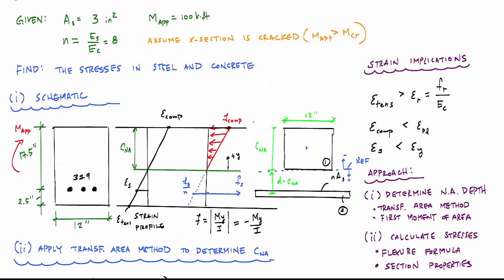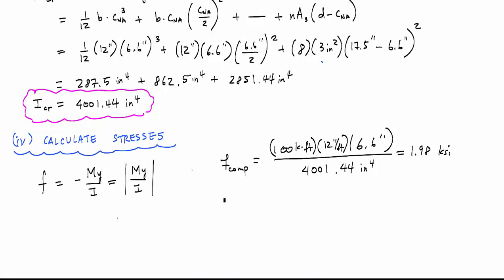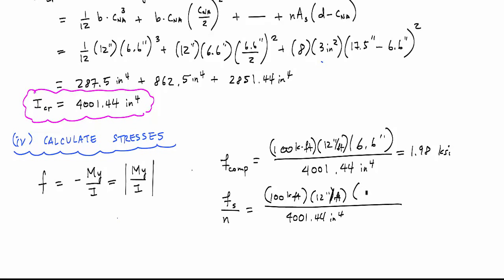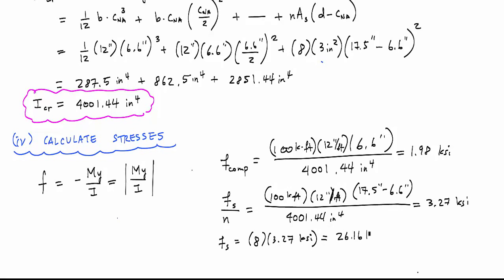To find the stress at the steel location, the equivalent concrete stress there is f_s / n. The distance from the neutral axis to the steel is 17.5 − 6.6 = 10.9 inches. Proportioning from the top: (1.98 / 6.6) × 10.9 = 3.27 ksi as the equivalent concrete stress. The actual steel stress is f_s = n × 3.27 = 8 × 3.27 = 26.16 ksi, which confirms the steel is in the elastic range — well below the 60 ksi yield stress.